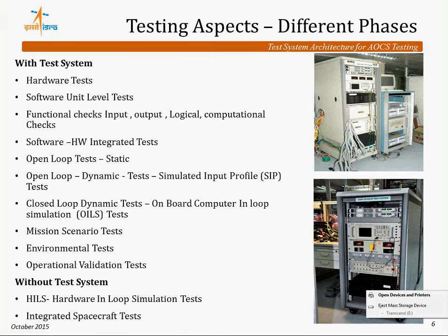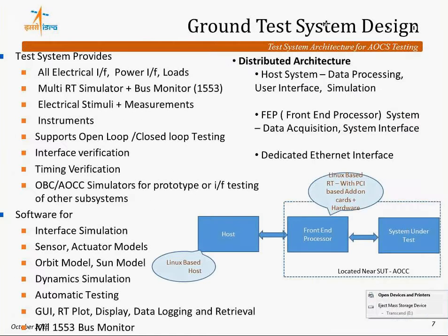Closed-loop dynamic test is where the onboard computer is in loop with the simulation, so the dynamics are also in loop in dynamic mode. Mission scenario tests and environmental validation tests are done for operations — for critical operations like Mars orbit insertion, any TMI, or similar cases, we run through all procedures once in the test bed. The same test system is not used directly for hardware-in-loop simulation; it is a modified version where only the onboard computer goes into hardware-in-loop simulation.